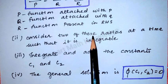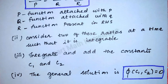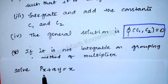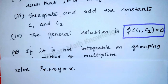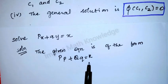If the grouping method is not possible, we can apply Lagrange's method of multipliers for getting the general solution. The problem is px + qy = x. This is the partial differential equation. If the equation contains x, y, z, p, q, then we go with Lagrange's method. The given equation is of the form Pp + Qq = R.